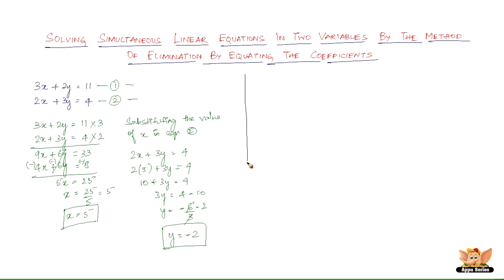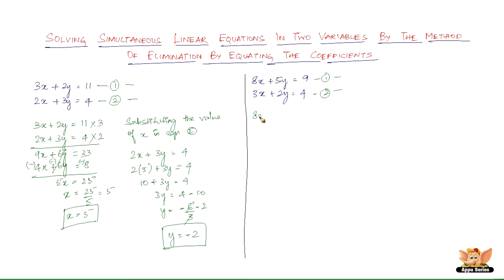Let us quickly solve another problem. We've got another set of simultaneous linear equations in two variables. Let us solve this by the method of elimination by equating the coefficients. Let us name this equation 1 and this equation 2.